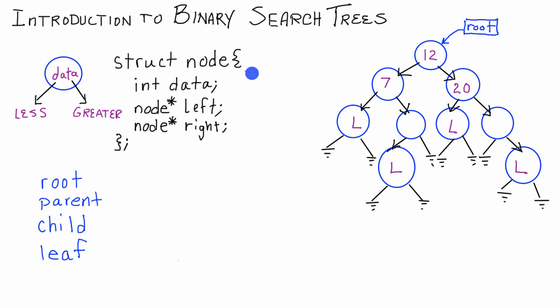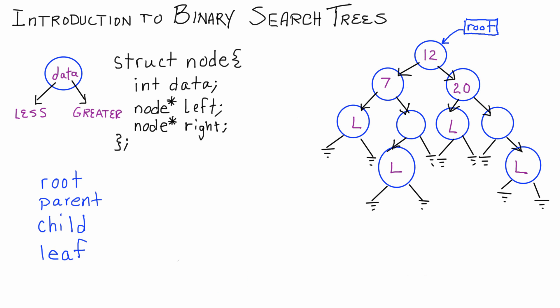I think that was a pretty good introduction to binary search trees. We talked about the basic building block — nodes that hold data and can point to other nodes via left and right pointers. We talked about the BST property: nodes in the left subtree have values less than the current node, and nodes in the right subtree have values greater than it. And we covered the terms root, parent, child, and leaf. In the next tutorial, I'll explain how we add nodes to a tree. Thanks for watching, have an excellent day, and don't forget to subscribe.